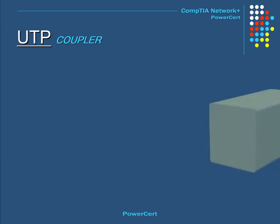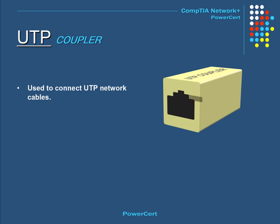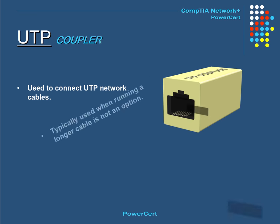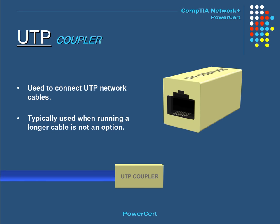A UTP coupler is used for connecting UTP cables with RJ45 connectors to each other. This is typically used when running a longer cable is not an option — you just plug one end of the cable into the coupler and then add another cable on the other side, successfully extending your UTP cable.